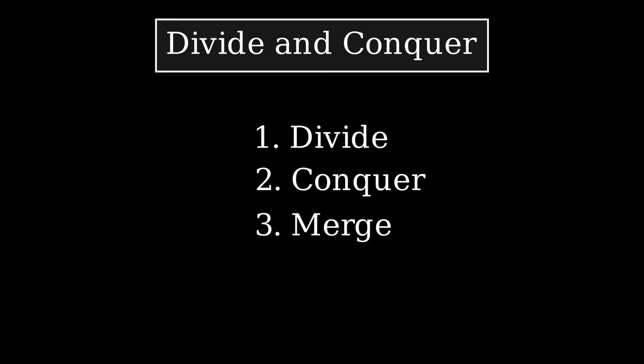Divide and conquer is a popular paradigm in algorithm design. A divide and conquer algorithm has three phases. Firstly, we have the divide phase, where you split up the problem into smaller sub-problems. Secondly, we have the conquer phase, where you solve each small problem. Lastly, we have the merge phase, where you merge these smaller problems into a whole solution. It is really simple.